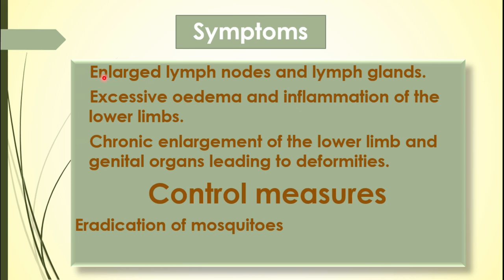The symptoms of elephantiasis include enlarged lymph nodes and lymph glands, since the adult worm lives in the lymphatic system. The second symptom is excessive edema — accumulation of fluids — and inflammation of the lower limbs, which become huge and massive like an elephant's leg, giving the disease its name. The third symptom is chronic enlargement of the lower limbs and genital organs, which gradually enlarges over time.